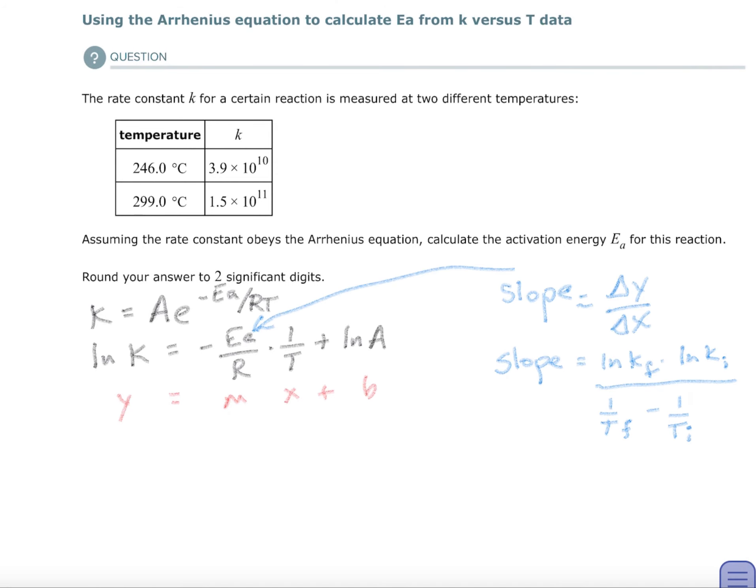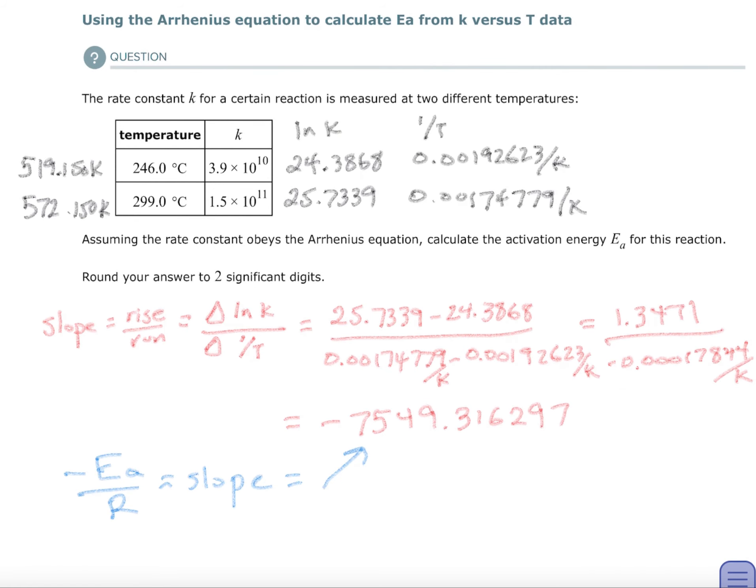So remember your slope is the change in y over change in x. So what I'm going to do is I'm going to change my two k's. I'm going to subtract my two k's. And that should be a subtraction. Natural log of k final minus the natural log of k initial over the changes in the temperatures.